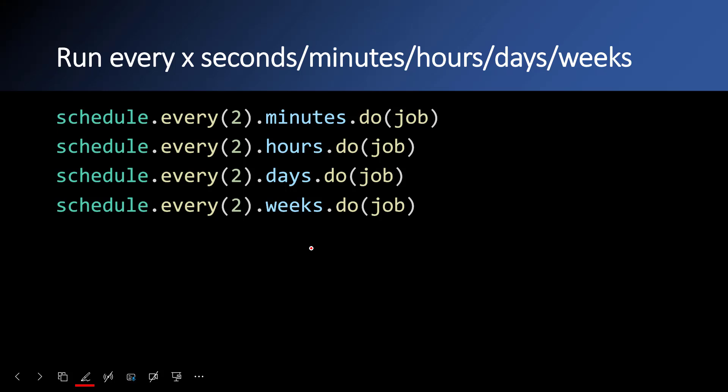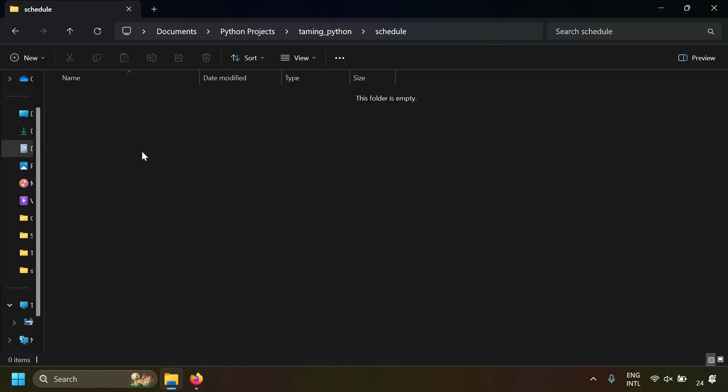With just a single line you can run your Python function at the desired periodicity. Let's see some examples. If you want to run the schedule every X minutes, hours, seconds, days, or weeks, you can use schedule.every(2).minutes, or hours, days, weeks, or seconds. If you use this syntax, the schedule will trigger starting from now. Let's try to see this in action.